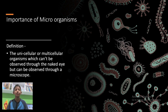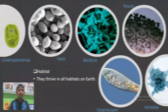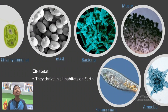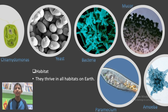First, let's find the definition of microorganisms. Unicellular or multicellular organisms which can't be observed through the naked eye but can be observed through a microscope are microorganisms. The next question that comes to mind is: where do they live? Actually, they thrive in all habitats on Earth.